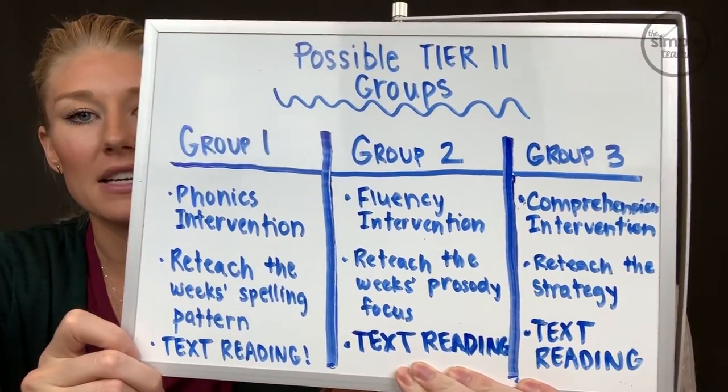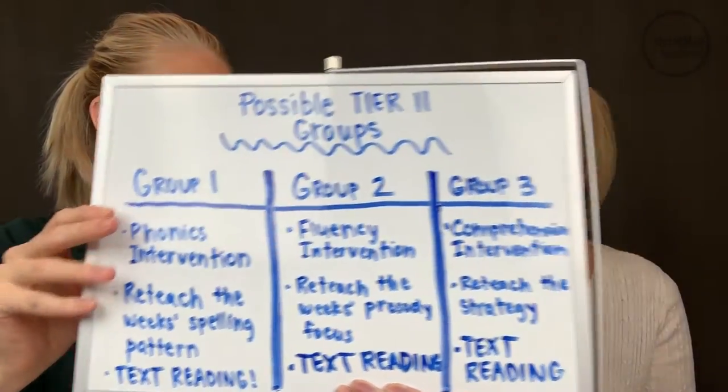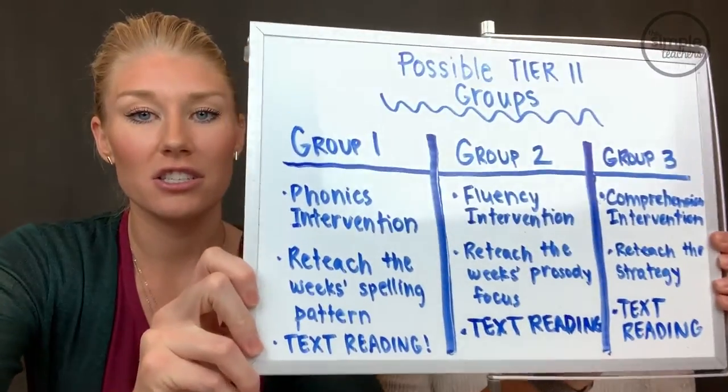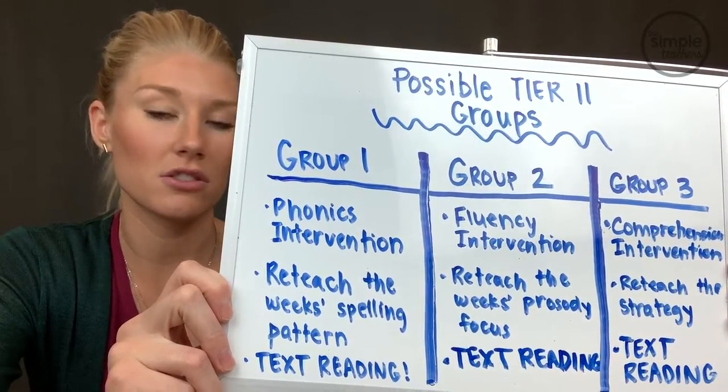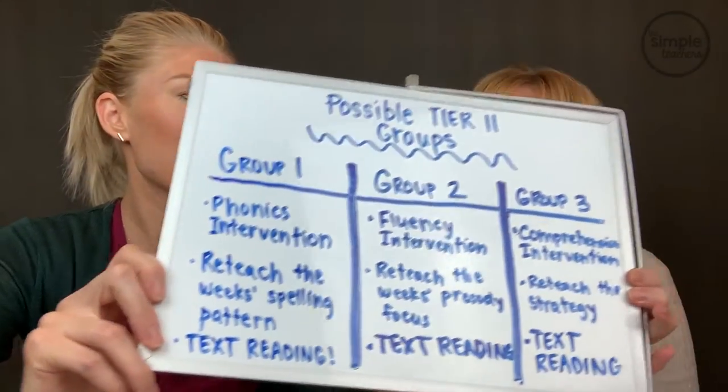We could also have a different group that needs a comprehension intervention — they're accurate readers, they sound nice when they read, their rate is appropriate. Whatever strategies you've been teaching in class for your comprehension instruction lessons, you would then reteach those in your Tier 2 instruction. Sometimes I don't start my comprehension intervention on Monday because I would have just started a new strategy. So we may continue a text from the prior week, and then maybe Tuesday or Wednesday re-read the main selection and redo that same strategy, or choose a different text with that same strategy.